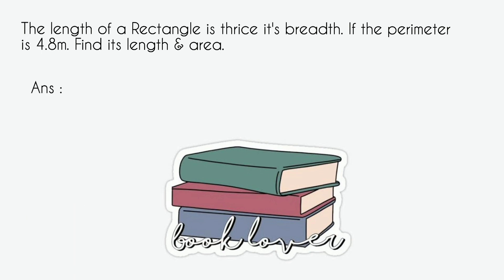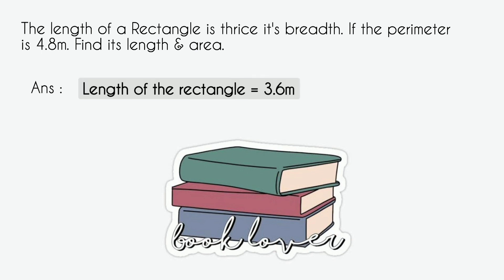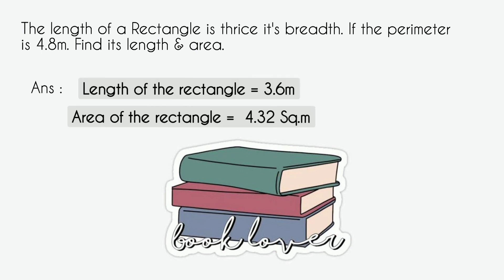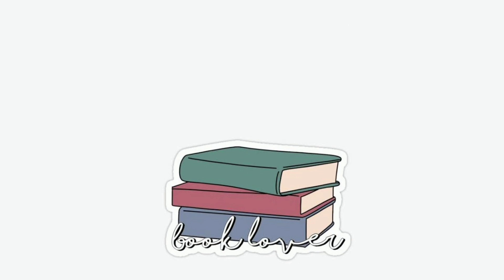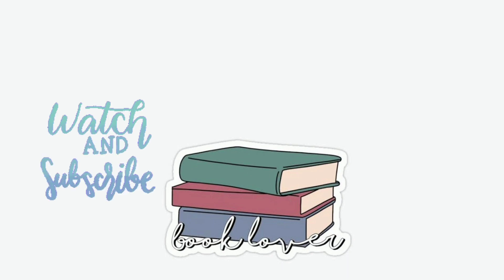The answer to this question is: length of the rectangle is 3.6 meters and area is 4.32 square meters. This question is a little tough, but if you know the formulas for perimeter and area and put the values in correctly, you will get the answers easily. If you liked this video, please subscribe to my channel Stars with Flower — thanks for watching.